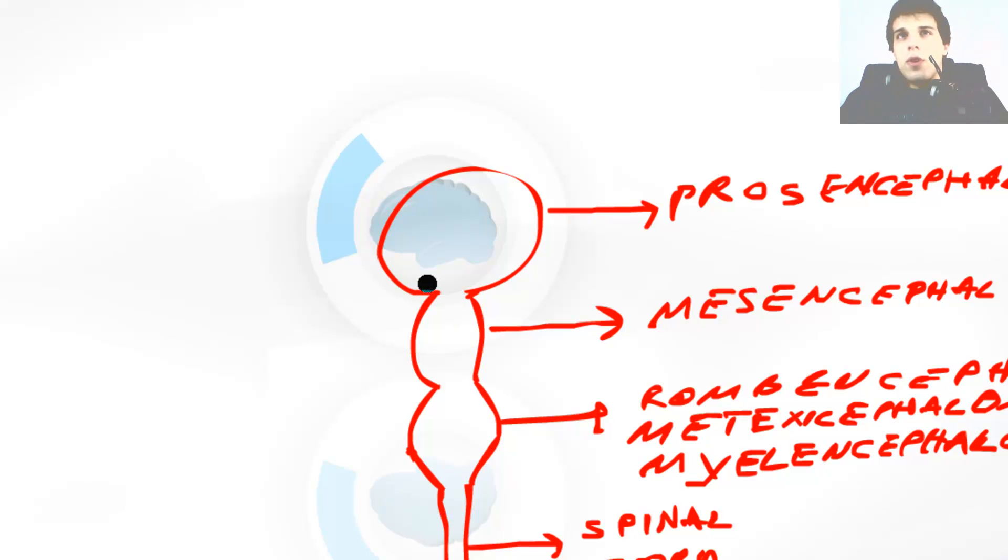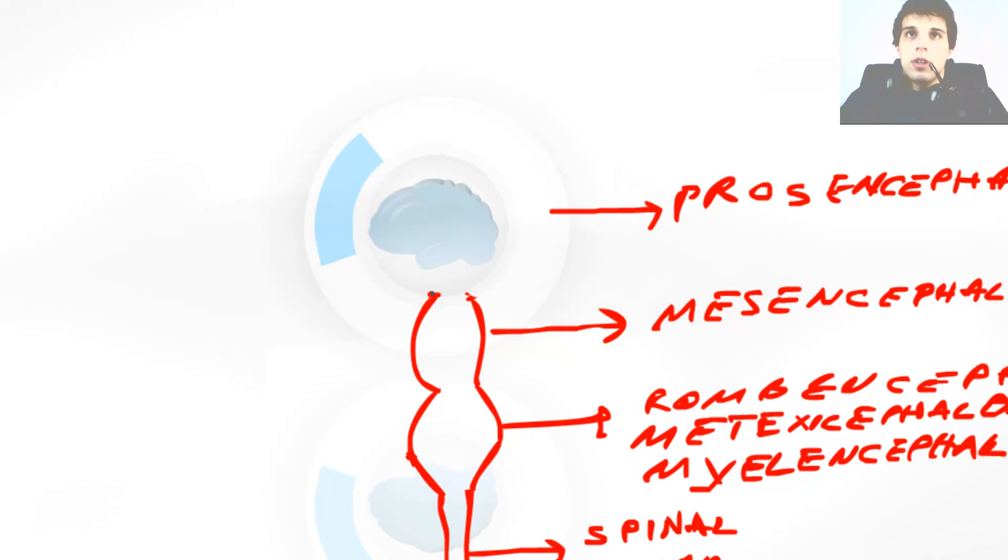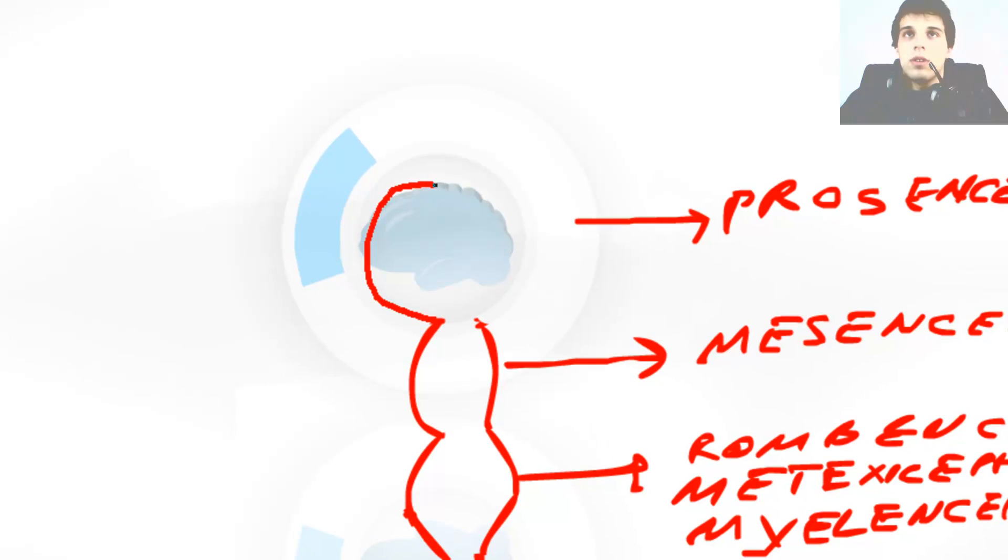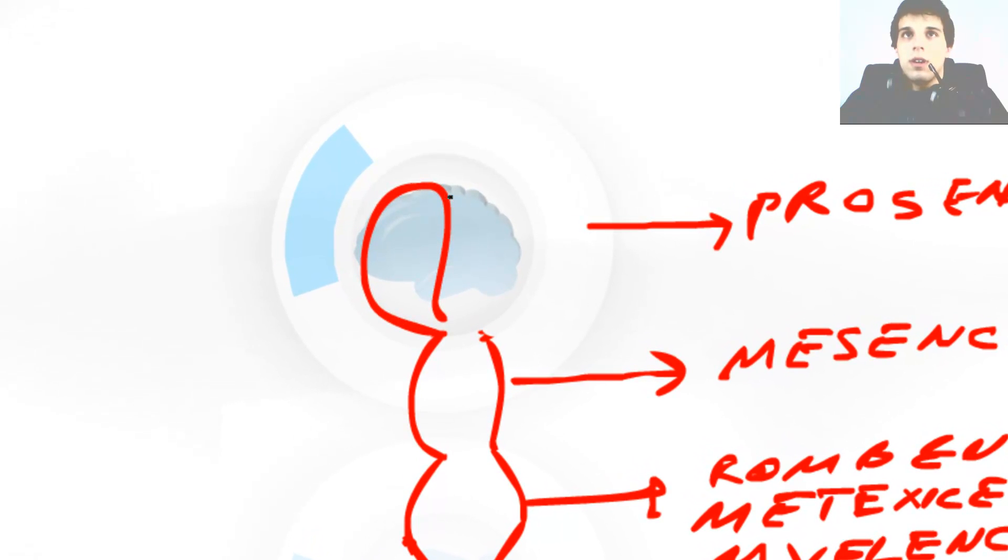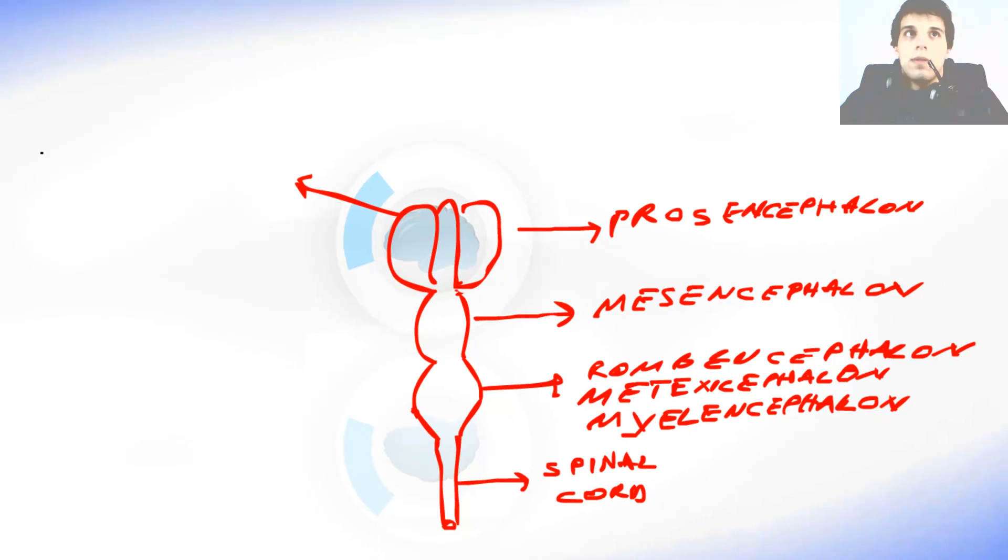During the fourth week of pregnancy there is one thing that is a bit changed. The prosencephalon has a bit different shape. We are able to distinguish two parts of the prosencephalon. This part over here is the telencephalon, and this part over here is the diencephalon.